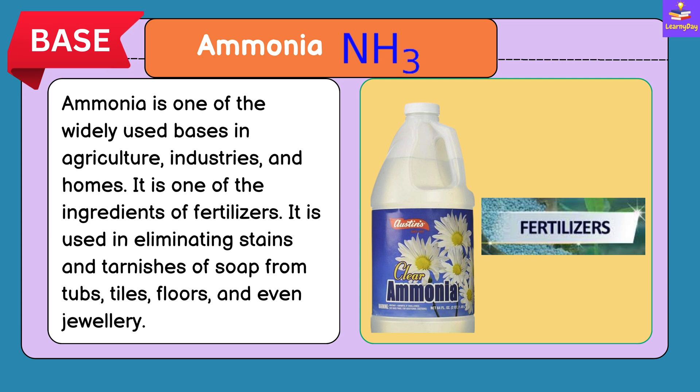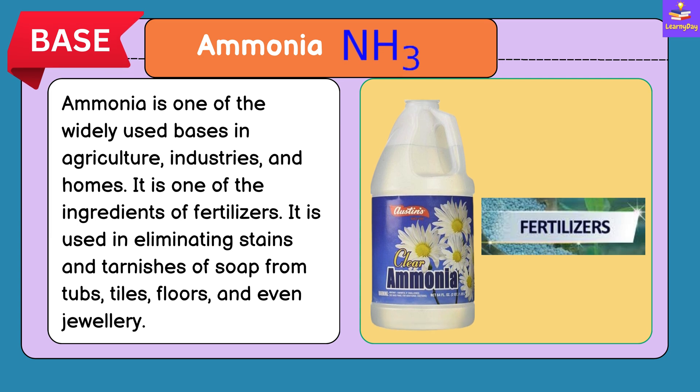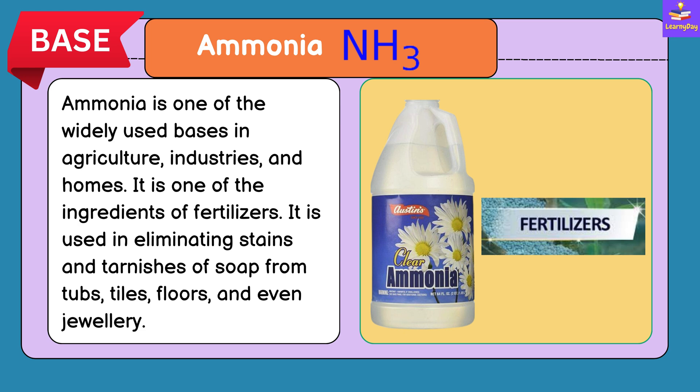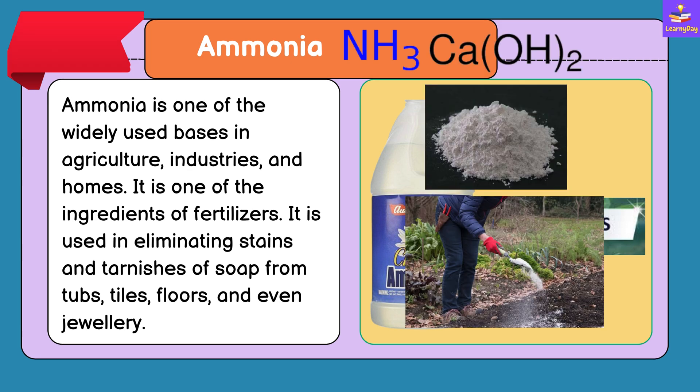Next is Ammonia. Ammonia is one of the widely used bases in agriculture, industries and homes. It is one of the ingredients of fertilizers. It is also used in eliminating stains and tarnishes of soap from tubs, tiles, floors and even jewelry.